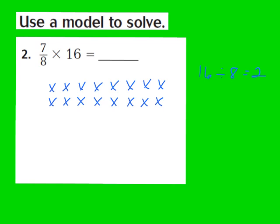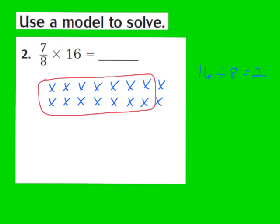This shows 8 groups with 2 in each group. Now that I have my array drawn, our next step is to identify the numerator in our given fraction. In the fraction 7/8ths, our numerator is a 7. So what I'm going to do next is circle 7 of those 8 equal groups: 1, 2, 3, 4, 5, 6, 7. So we're circling 7 of those 8 equal groups of 2.